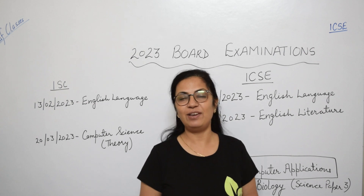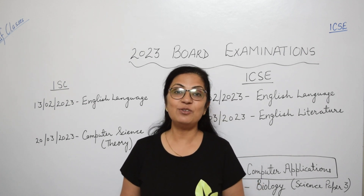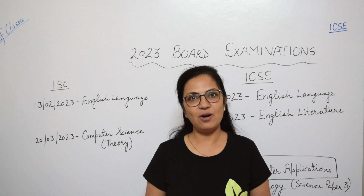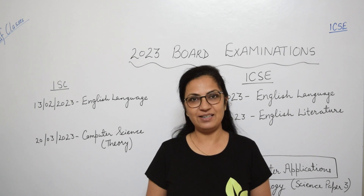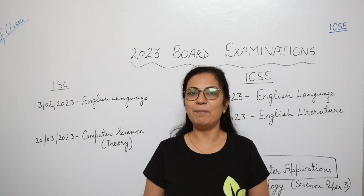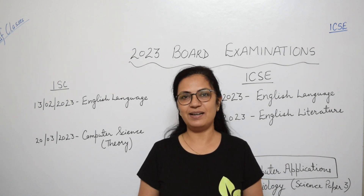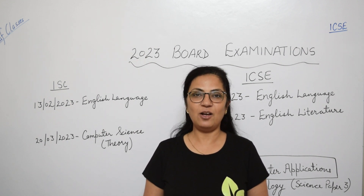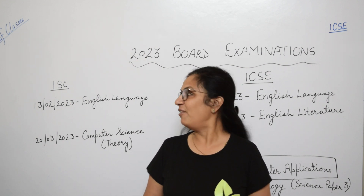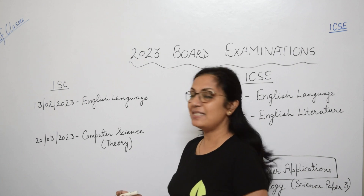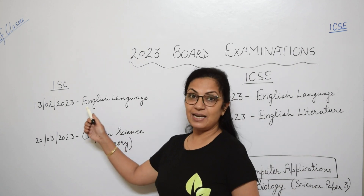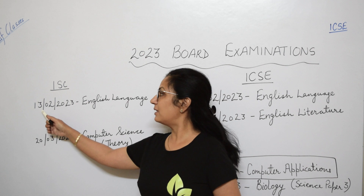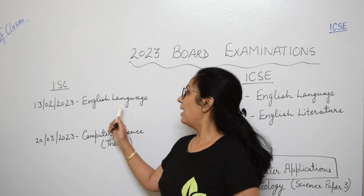The last ICSE paper is on 29th March, which is Biology. After that you are free to enjoy and manage your time according to your hobbies and interests. But till 29th March, my children, you have to work a lot. For ISC children, the papers are starting a little early — the first exam is on 13th February, English Language.